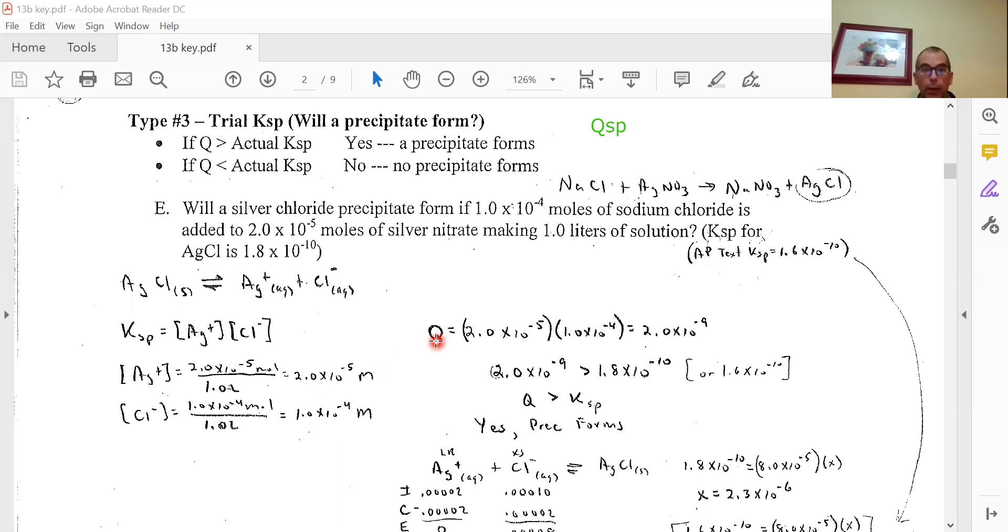We have our silver concentration and chloride concentration, and we'll solve for Q. Just like Ksp equals [Ag+] times [Cl-], Q equals [Ag+] times [Cl-]. Plugging in the numbers: 2×10^-5 times 1×10^-4 equals 2×10^-9. That's a pretty small number,